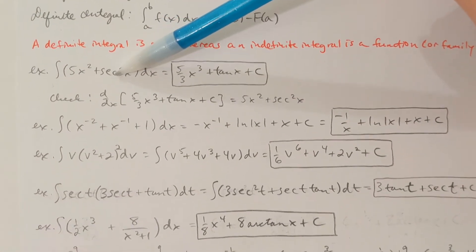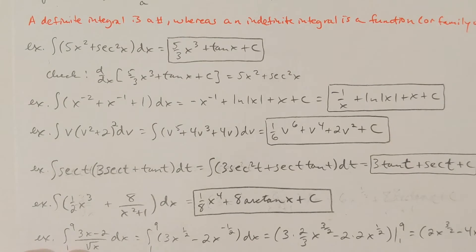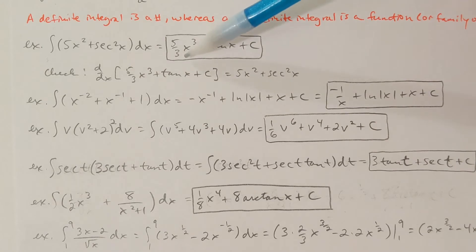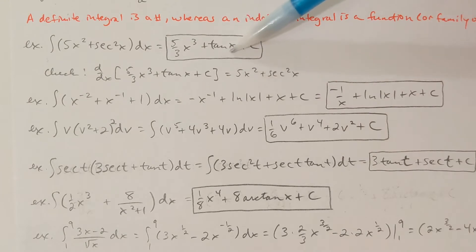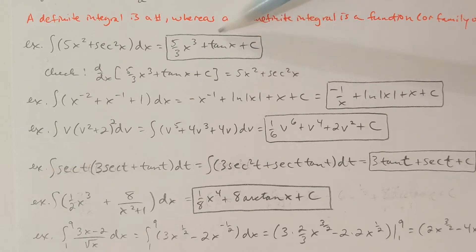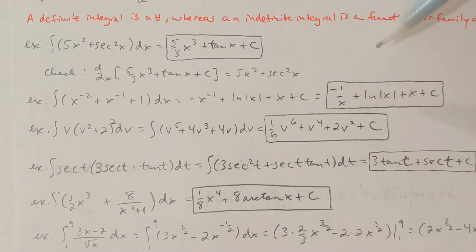Let's take a look at some more examples, starting with some indefinite integrals. Suppose that we want to integrate 5x squared plus secant squared x. The antiderivative of 5x squared would be 5x cubed divided by 3, using the reverse power rule — add 1 to the power, divide by the new power. And I know the derivative of tangent x is secant squared x. Plus a constant. Make sure you remember your plus c. If you don't, I will take a point off because you're indicating that c is 0, but c can be any constant, and the derivative of a constant is always 0.